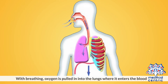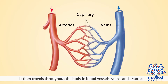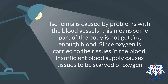With breathing, oxygen is pulled into the lungs where it enters the blood. It then travels throughout the body in blood vessels, veins, and arteries. Ischemia is caused by problems with the blood vessels, meaning some part of the body is not getting enough blood. Since oxygen is carried to the tissues in the blood, insufficient blood supply causes tissues to be starved of oxygen.